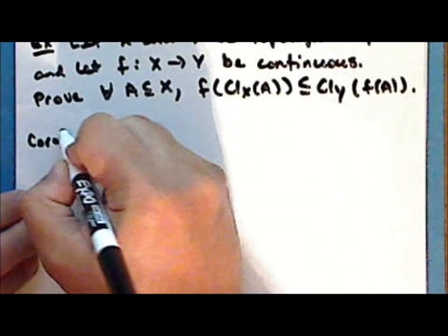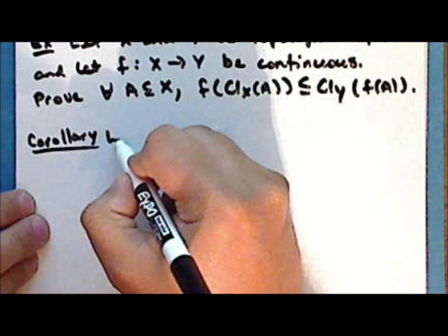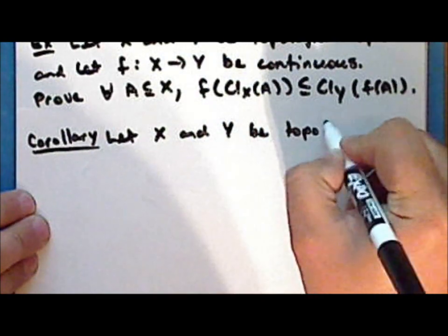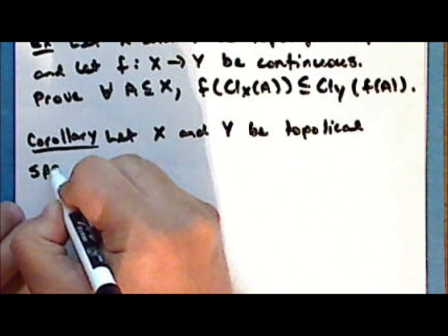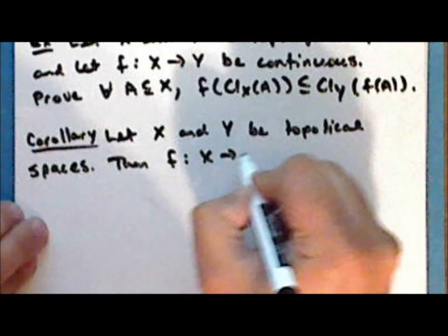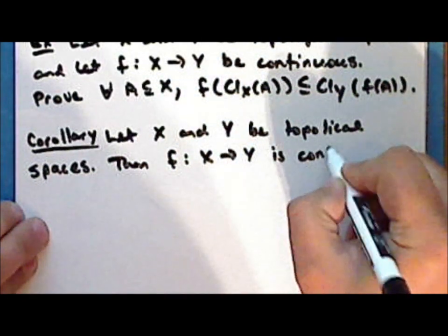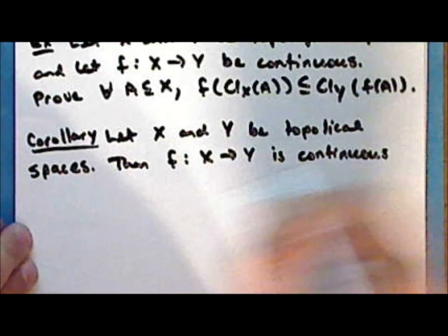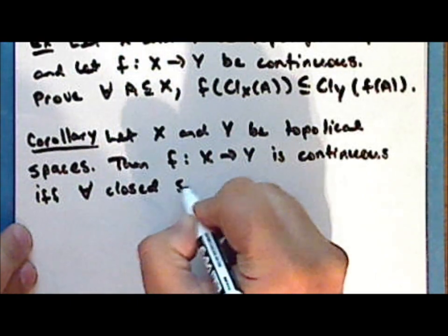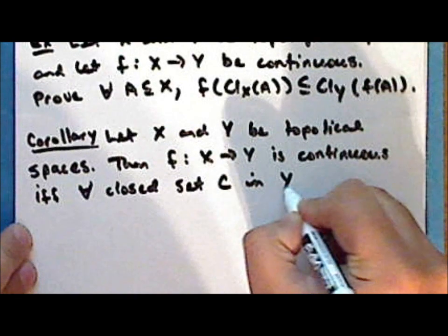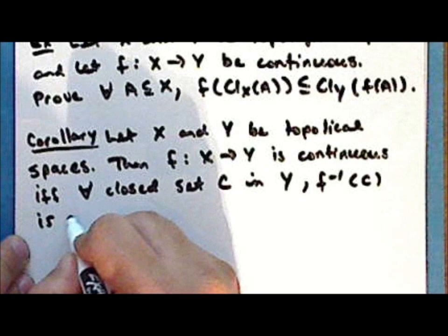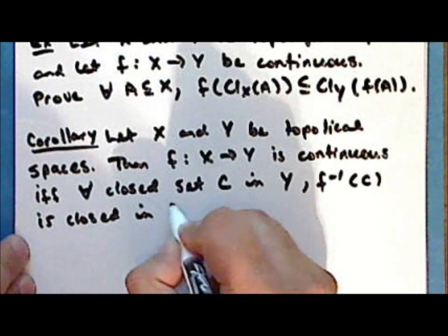New corollary: let x and y be topological spaces. Then the function f mapping x into y is continuous if and only if, for every closed set c in the space y, the inverse image of that set c is closed in the domain space x.